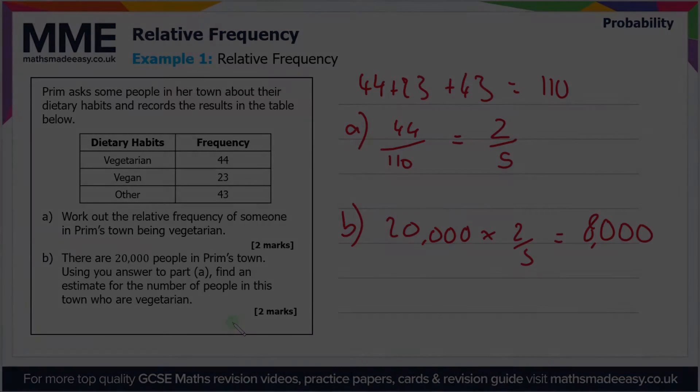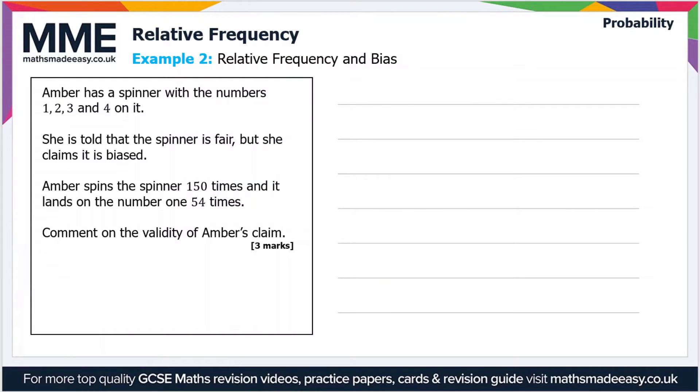Moving on to the second example: Amber has a spinner with the numbers 1, 2, 3, and 4 on it. She is told that the spinner is fair, but she claims it is biased. If the spinner is fair, then there's an equal probability of landing on a 1, 2, 3, or 4.